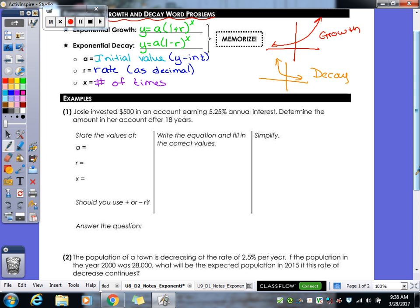So let's take a look at our first question. We have Josie invested $500 in an account earning 5.25% annual interest. Determine the amount in her account after 18 years. So let's go through what we know. A, as I said, is our initial value. So how much did she start with? So A is 500.